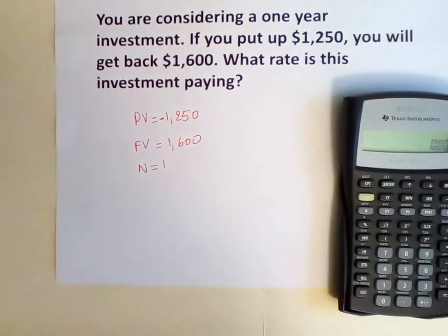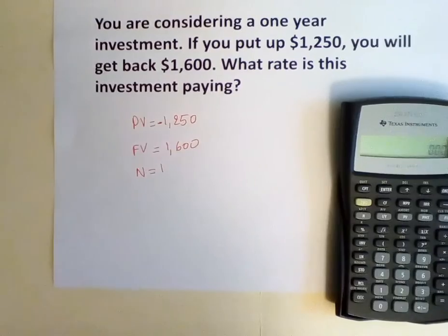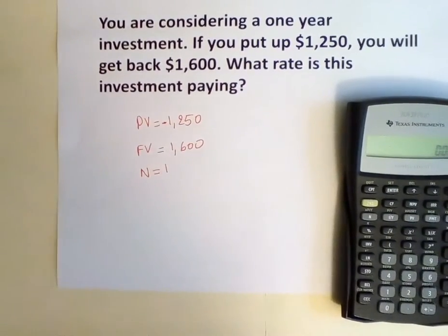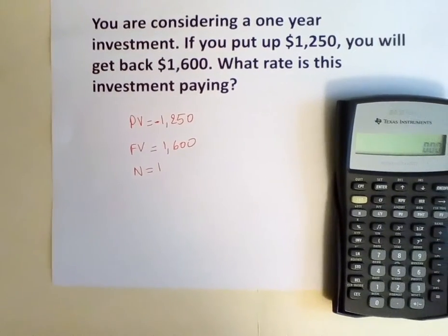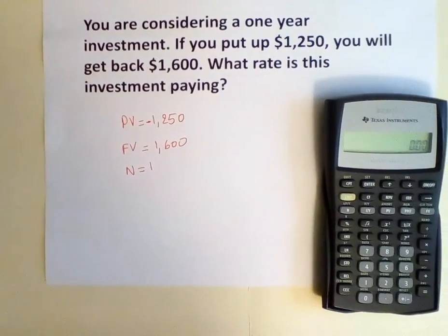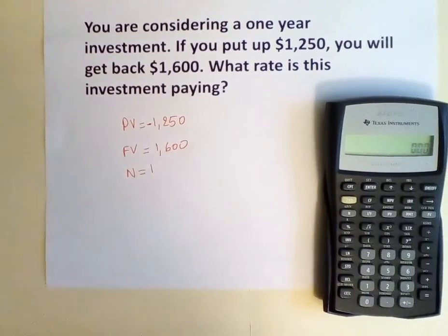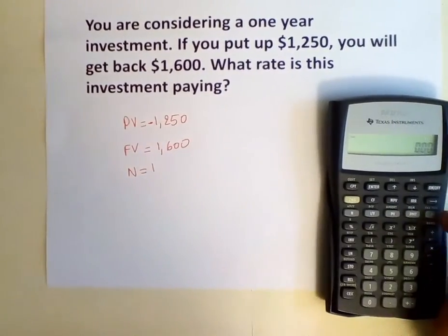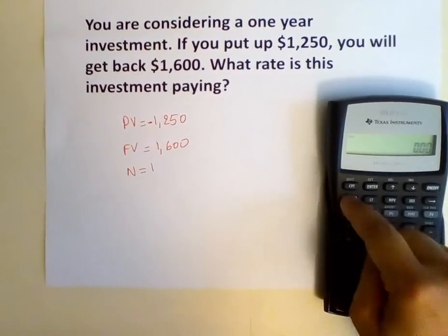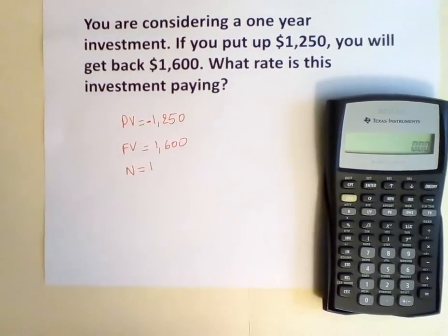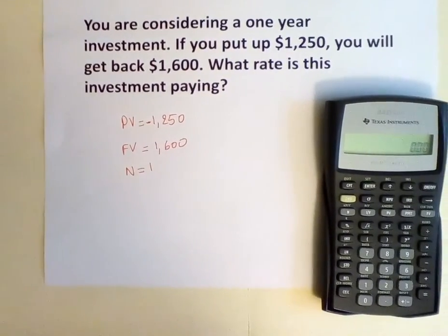Now that our inputs are ready, we need to input the information into the financial calculator. But before we do anything, we always have to make sure that we clear our work. To do that and to clear any work you've done before using your time value of money function, you hit 2nd, FV, which clears your time value of money work, and 2nd, CEC, which clears all your work. Then we're ready to input the information.